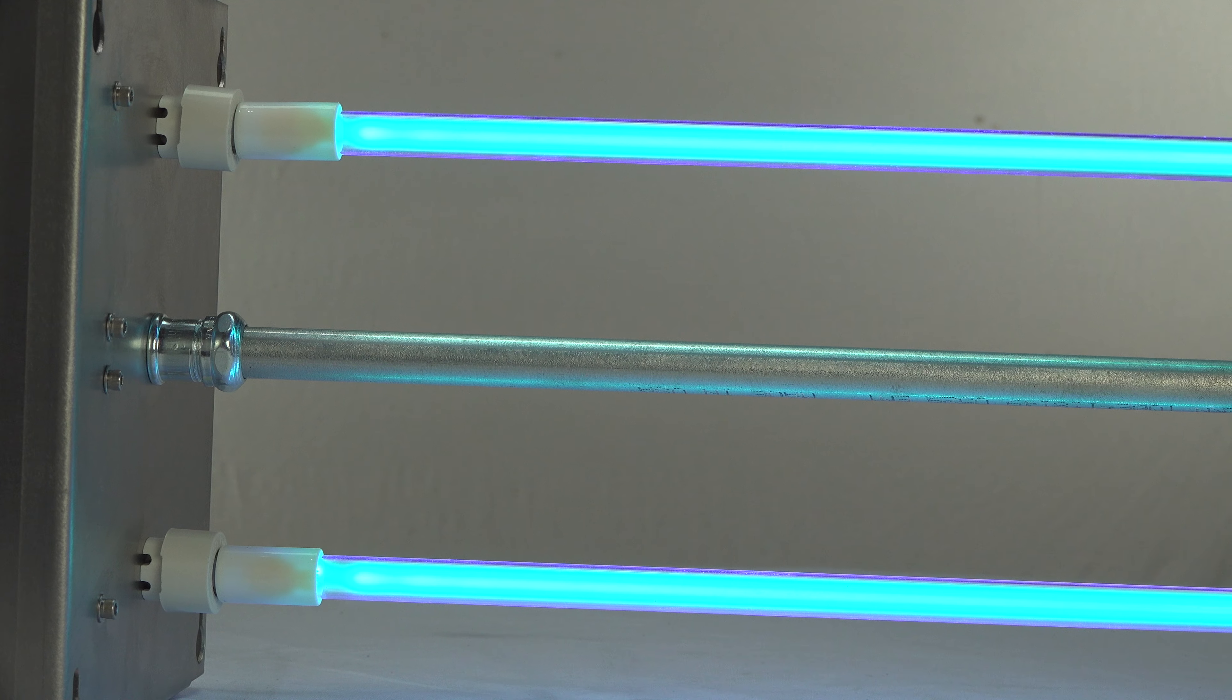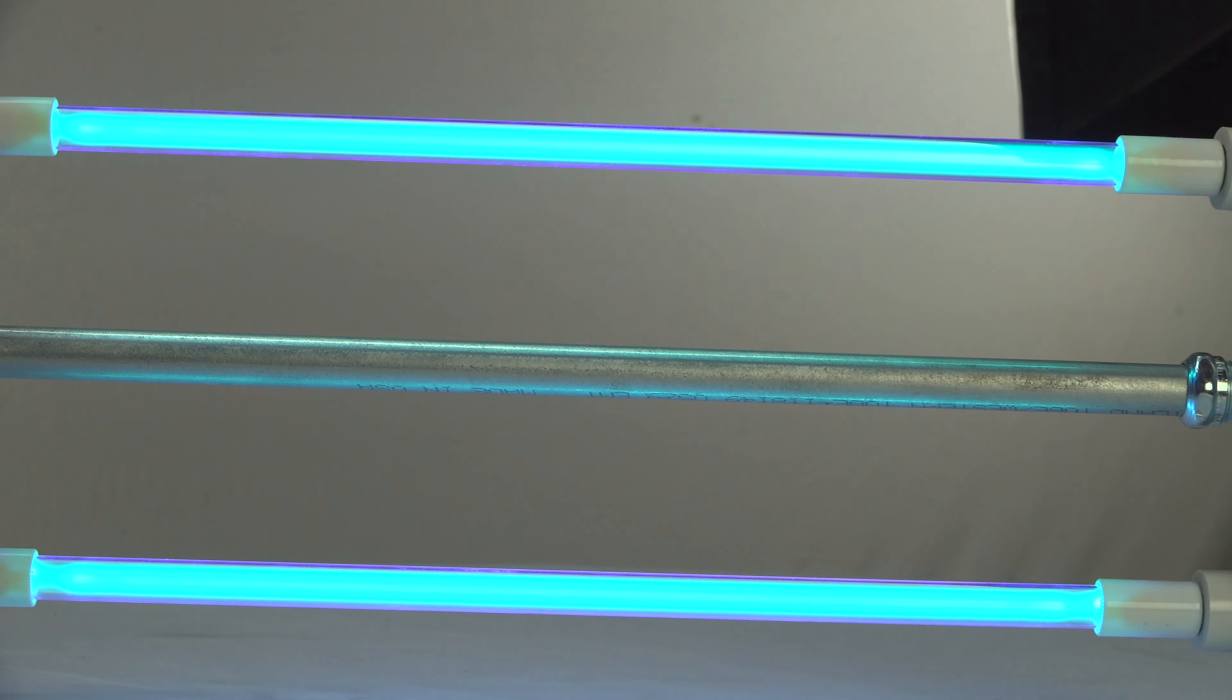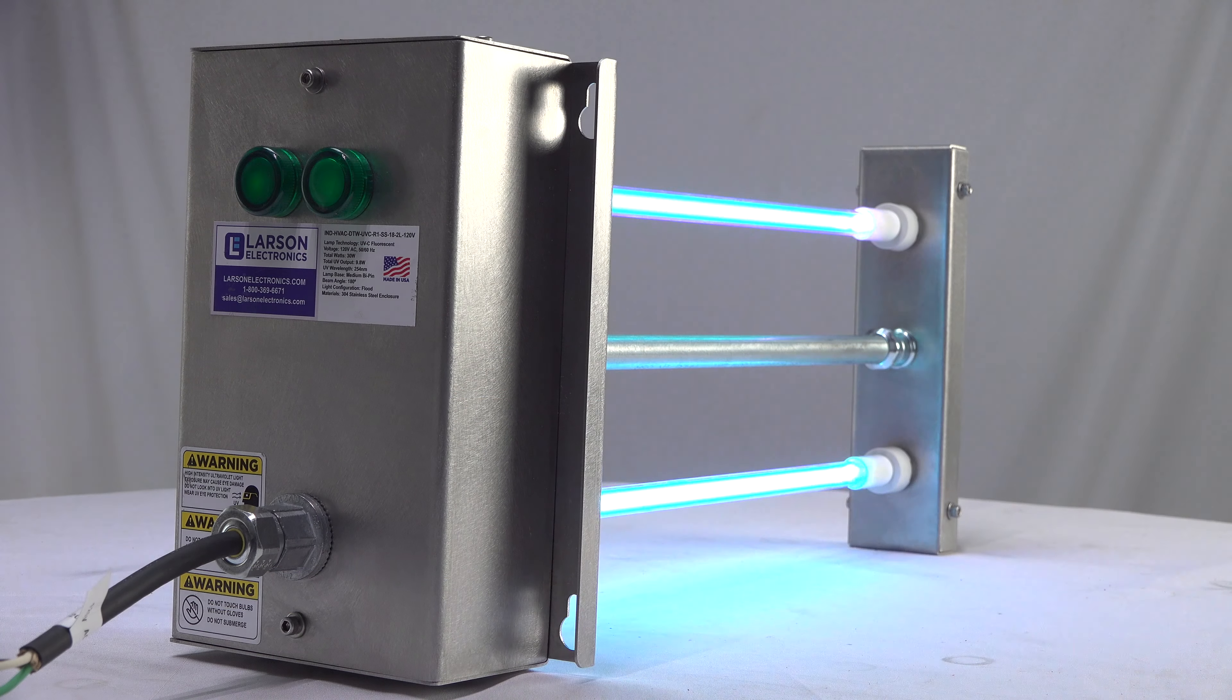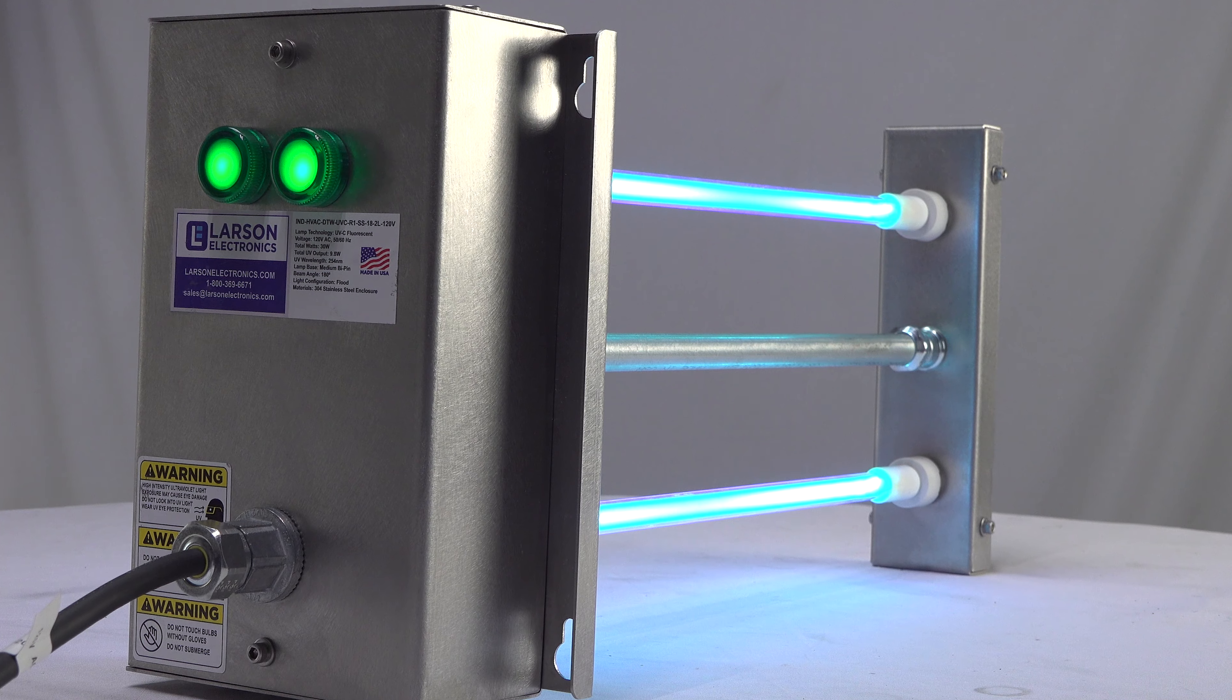However, there are other factors that need to be considered before installing UVGI lights inside an HVAC system, including the intensity of the UV light.